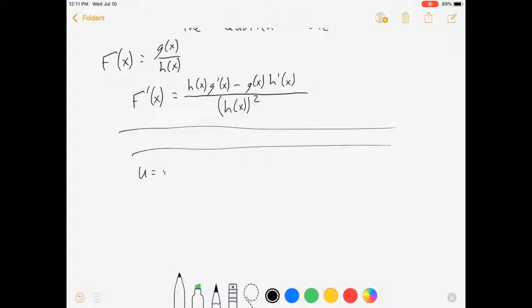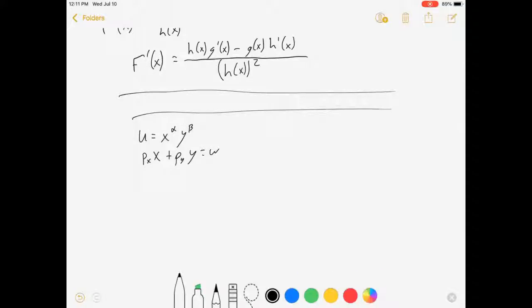where u is equal to x to the alpha times y to the beta, and we had some budget constraint px times x plus py times y equals w. One thing we get, and I actually solved for this in one of my other videos, is that the optimal level of y is equal to beta w over py times alpha plus beta.